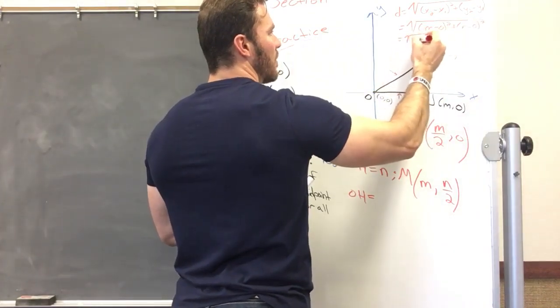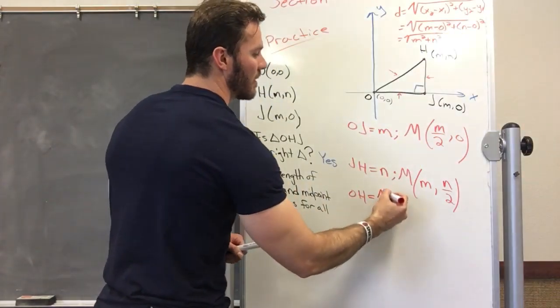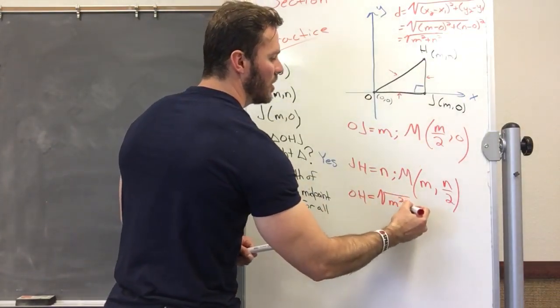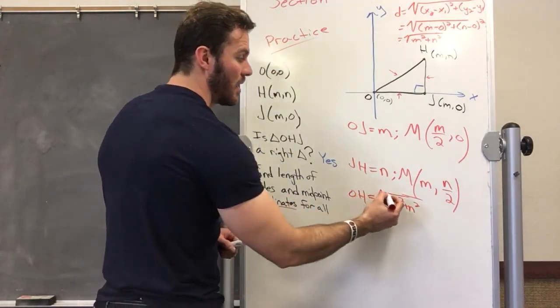So we get the square root of M squared plus N squared. That is the length—that is what you would write for the distance, for the length of OH.